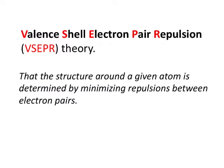So what is the valence shell electron pair repulsion theory? Basically it states that the structure around any given atom is determined by that atom minimizing the repulsions between the electron pairs. You're typically going to have pairs of electrons, either in bonds or in lone pairs. All these electrons are negative, so they repel each other and want to get as far away from each other as possible, ending up in a particular shape. You can use this information to predict the shape that simple molecules will form.